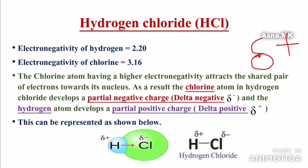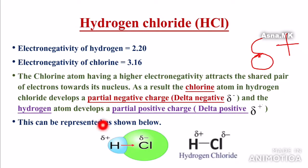So in HCl: hydrogen is delta-positive, chlorine is delta-negative. HCl has covalent bonding — electrons are shared. These are different atoms, hydrogen and chlorine, with different electronegativity values.